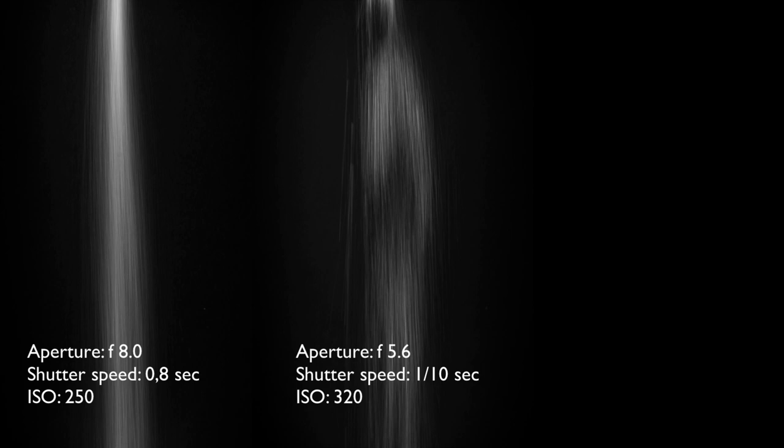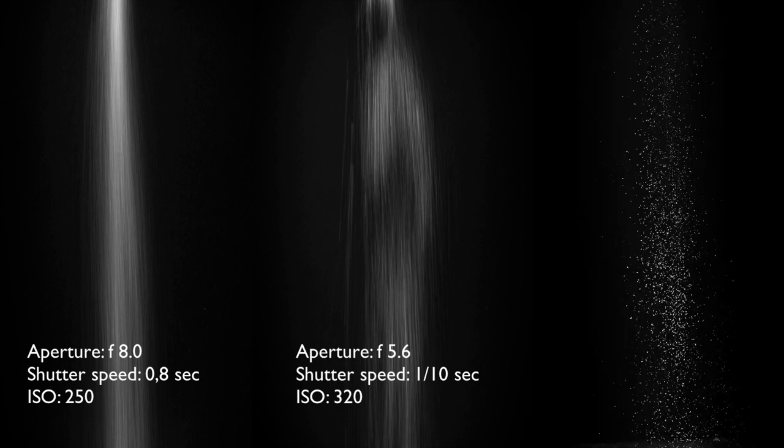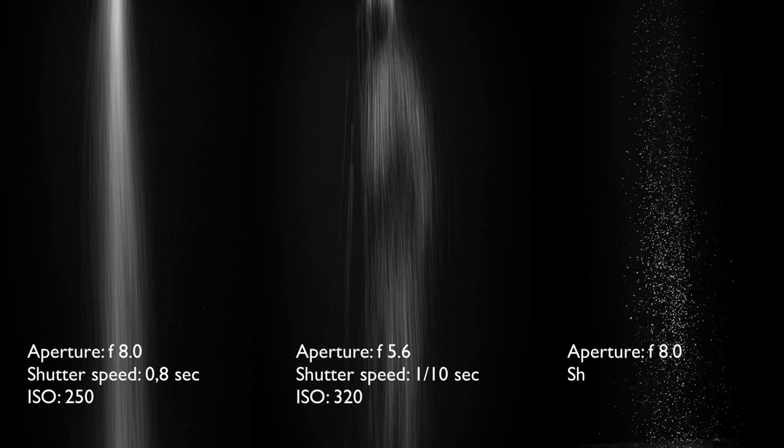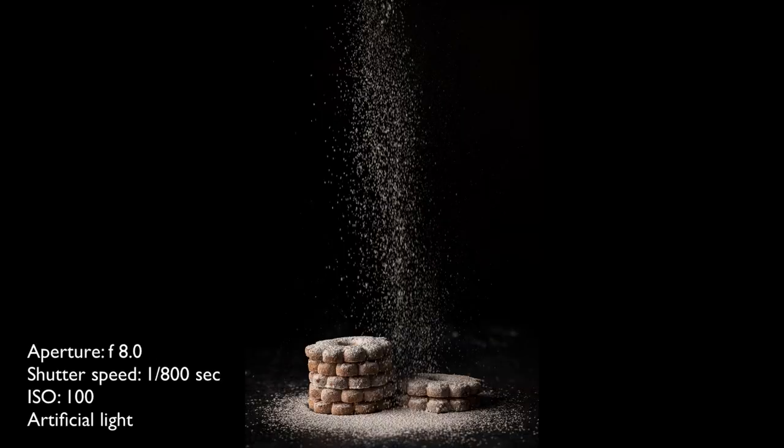If you want to capture the pieces of the dusting sugar, we need to increase the shutter speed even more. This is the result I wanted to achieve, so I proceeded bringing the cookies into the scene, and this is the final image. I highly advise you to experiment first without any cake or cookies because it's much more difficult to remove the sugar from the cake than if you would simply use a paper to make your testing in order to get the settings right.